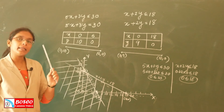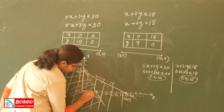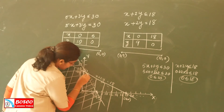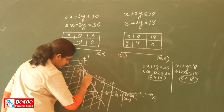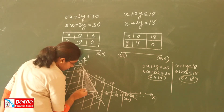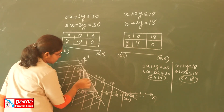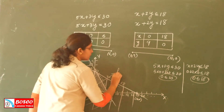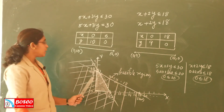The common shading region of both constraints is the feasible region. Where the shading of the two line segments overlaps, that common shaded region is what we call the feasible region.